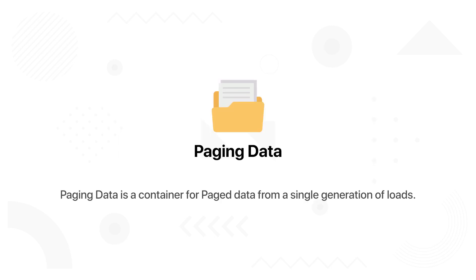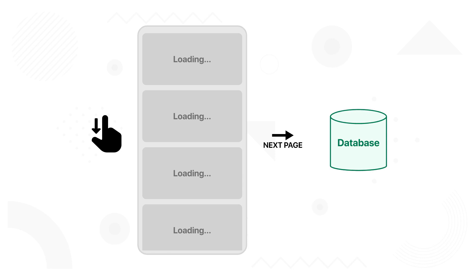An instance of PagingSource is used to load pages of data for an instance of PagingData, and that's when the PagingData class comes into play. PagingData is a container for paged data from a single generation of loads. PagingData queries data from its PagingSource in response to loading hints, which can be generated as the user scrolls in the lazy column. When we scroll that lazy column list, our PagingData and PagingSource are notified and a new page of data is received, if there is one. Each refresh of data will have a separate corresponding PagingData.